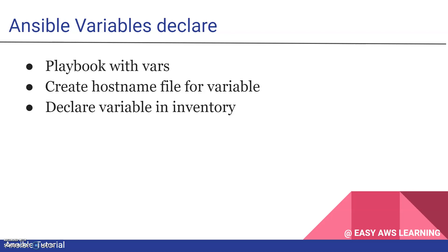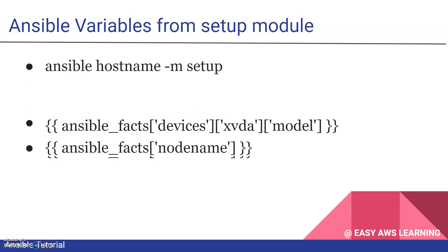The second way is to define your variables in a host name file, where you create a file named the same as your hostname and declare multiple variable names inside it. The third way is to declare variables in your inventory file, where alongside the host name alias you can add multiple variables on the same line. We will see some of these approaches in the demo section.